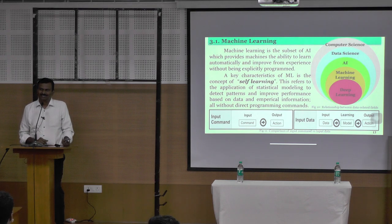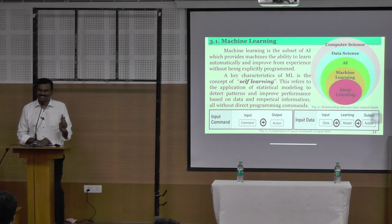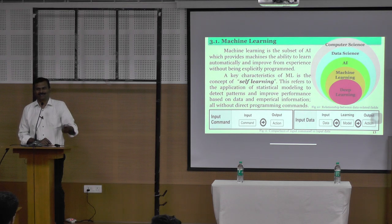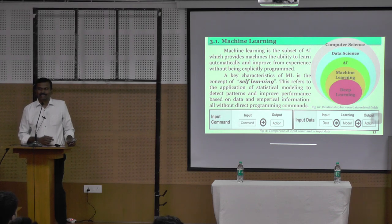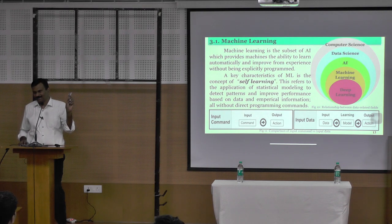From childhood itself, you have seen this. So your mind was told: this is a wristwatch. Similarly, in future, even after ten more years, if somebody shows this to you, you immediately say: this is a wristwatch. How? Because of previous experience — what we learned from childhood itself — that reflects to identify what this is.